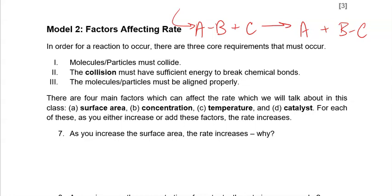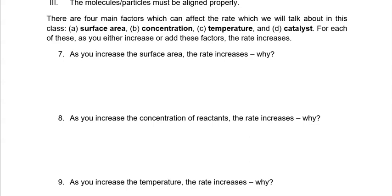If that same punch with the same energy hits them right in the face, that's much more likely to knock around their brain and skull and leave them unconscious. So if you're having a hard time remembering that you must get a collision, that collision needs sufficient energy, and that orientation matters, just think about trying to knock someone out. Now that we've talked about what's required for a reaction to occur, let's think about how various factors change the rate.